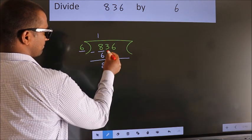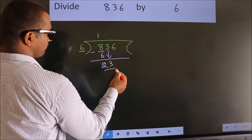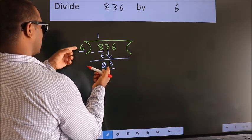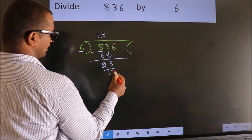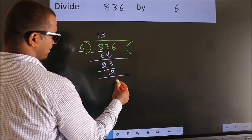After this, bring down the beside number. So 3 down. So 23. A number close to 23 in the 6 table is 6 threes 18. Now we subtract. We get 5.